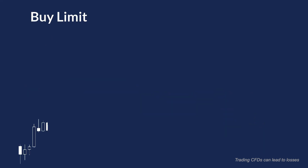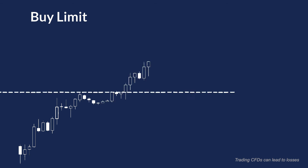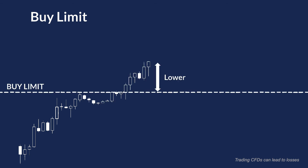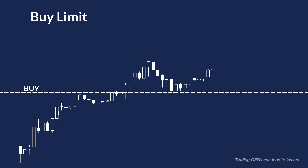A Buy Limit is the predefined price set by a trader when he wishes to buy the asset in the future. The price for the Buy Limit is always lower than the current market price. This order type is used when the trader hopes the price of his asset will rise after a pullback.